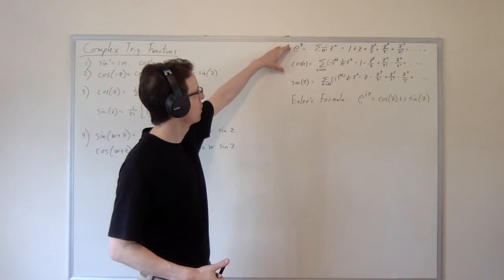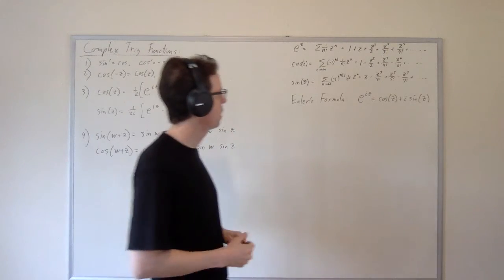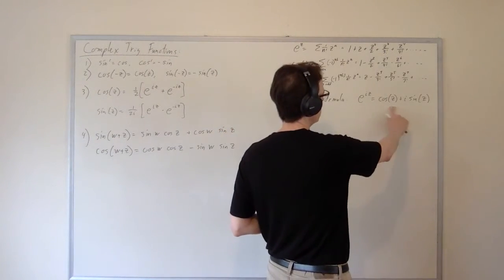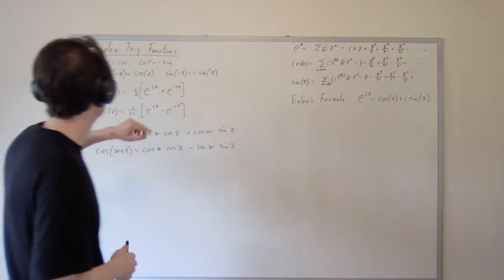We've used power series definitions for e to the z, cosine z, and sine z, and we've used those power series definitions to prove Euler's formula: e to the iz equals cosine z plus i sine z. That's going to figure in prominently to these proofs here.